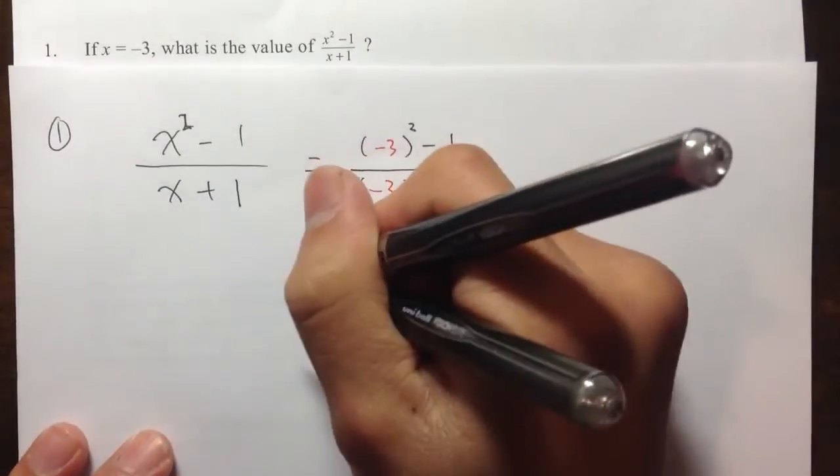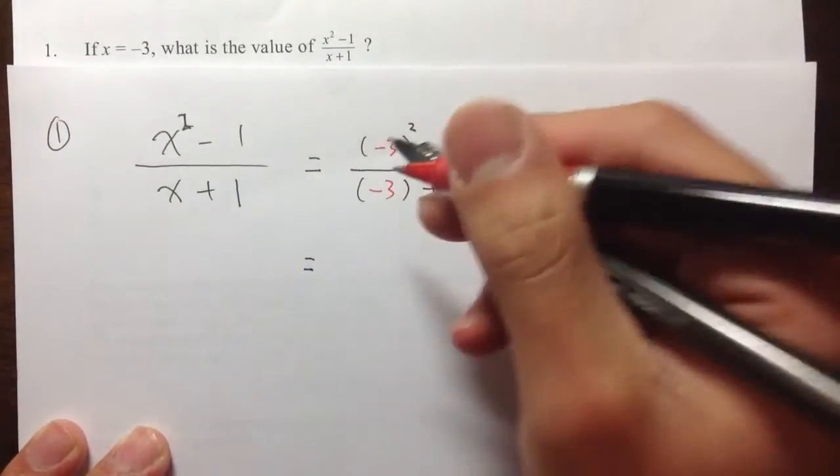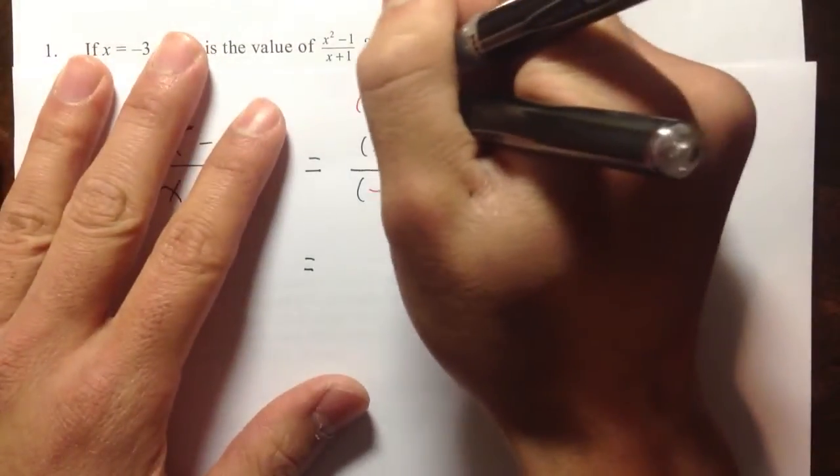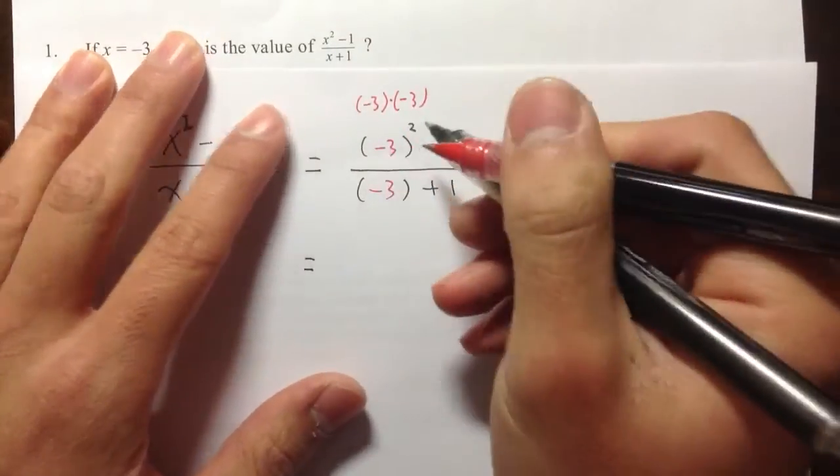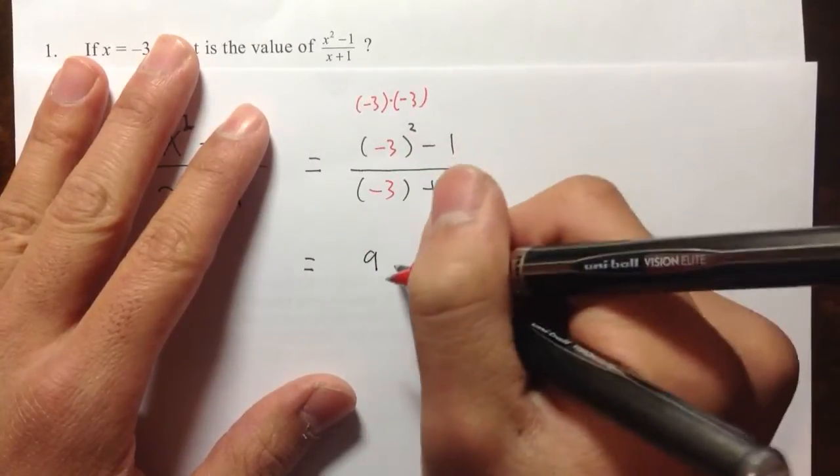Okay, and be careful with the order of operation. We are going to do the exponent first. So negative 3 squared, this means we are going to do negative 3 times negative 3. So negative 3 times negative 3, we get a positive 9. And then we have the minus 1 on the top.